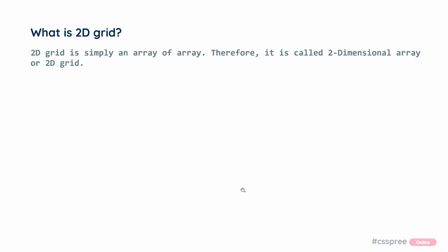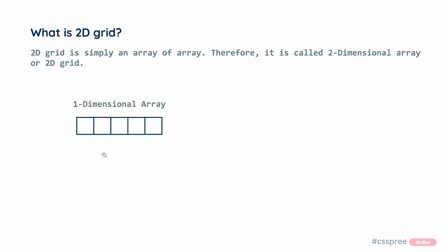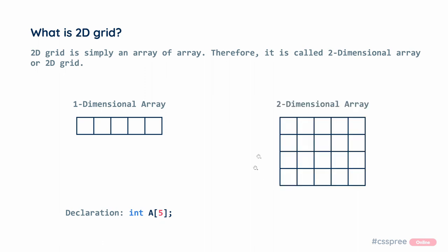First, we see the 2D grid. The 2D grid is an array of arrays. We have to call a normal array of arrays — we call it a 2D grid. This is the data type and the 2D grid will give the size.